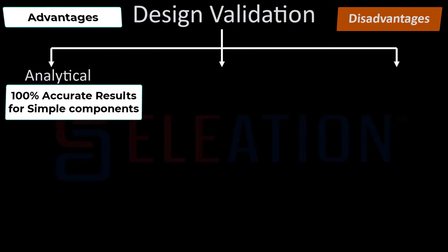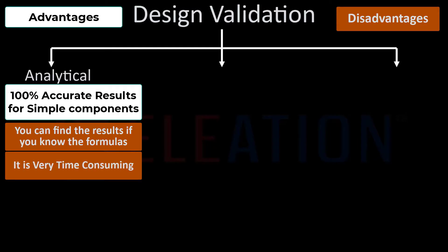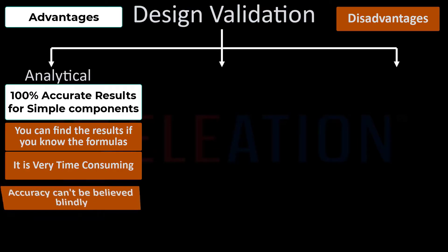Analytical method: as a manufacturer using the analytical method, you will achieve 100% accurate results for simple components. However, for complex designs, achieving 100% accuracy is challenging. The analytical method relies heavily on existing formulas. If you lack the necessary formulas, results can't be found, necessitating an engineer who is knowledgeable in these formulas. The analytical method can be time-consuming as it involves solving the same equation at multiple locations to gauge results on the entire component. Relying solely on the accuracy of results is risky due to the assumptions made in most formulas, which might not be applicable to your product.